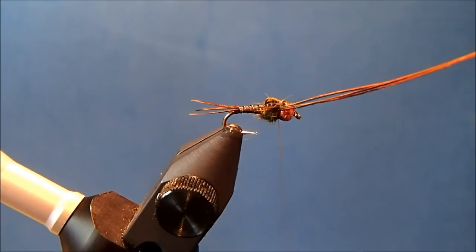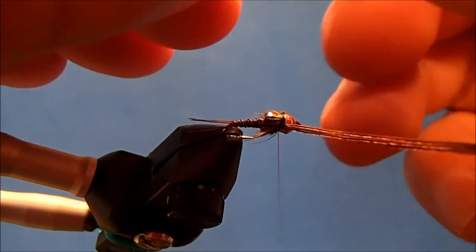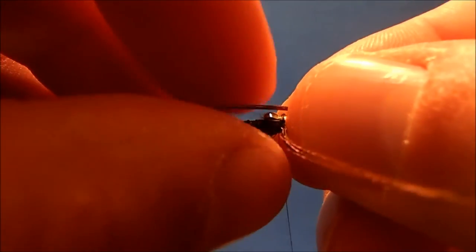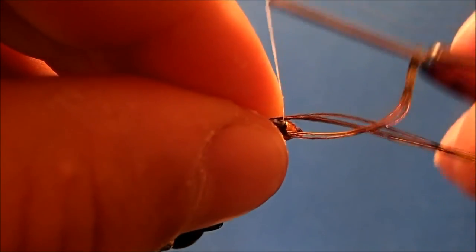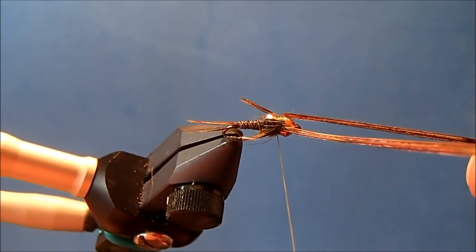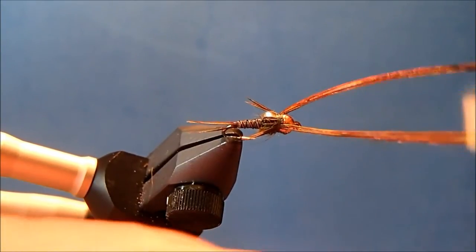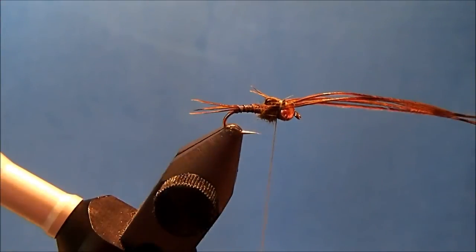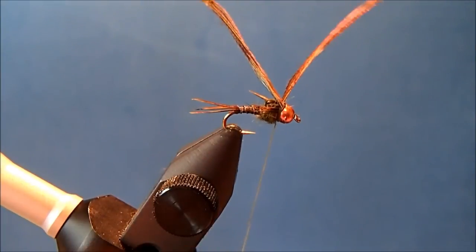Now I'll take another group of legs and do the same thing to the other side. Again, not worried about length on this first wrap—just want to get them in and placed, then draw them to the length you're looking for. When you're happy with that, I'll bring them up and over and trim these off.